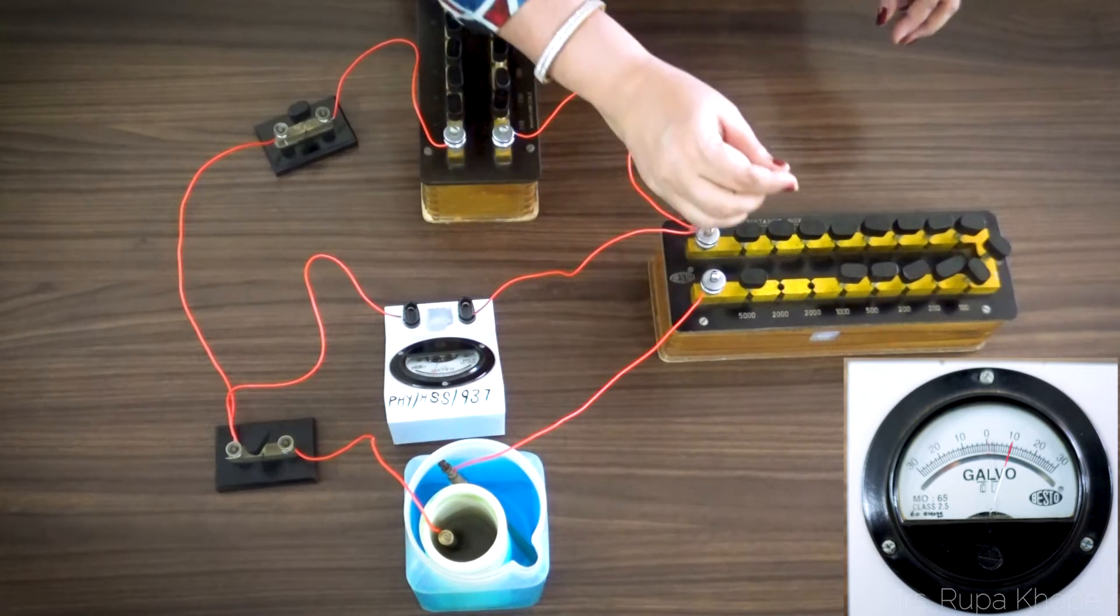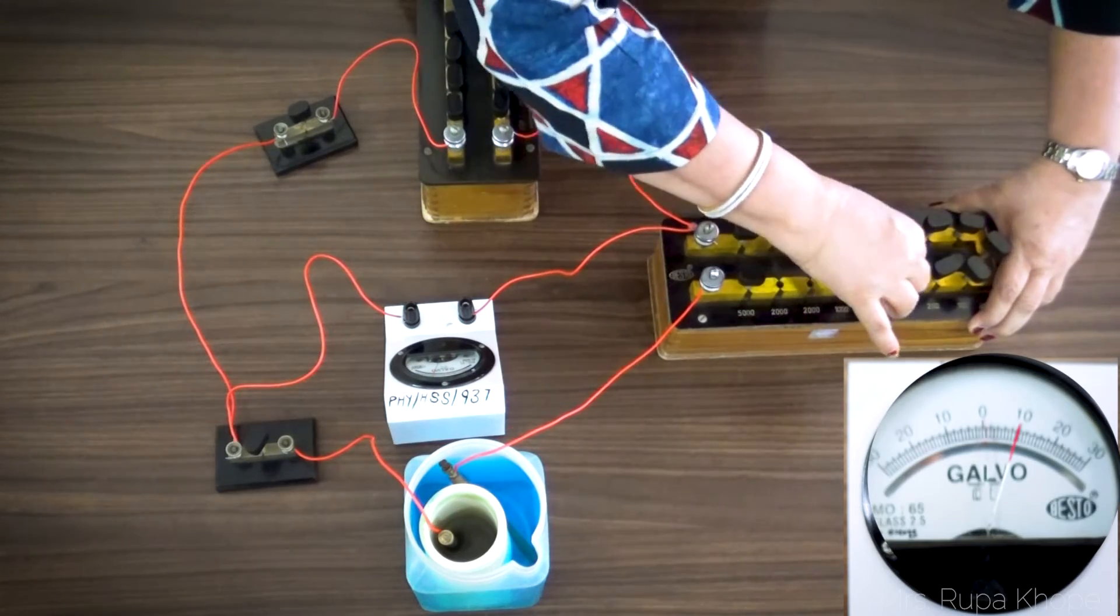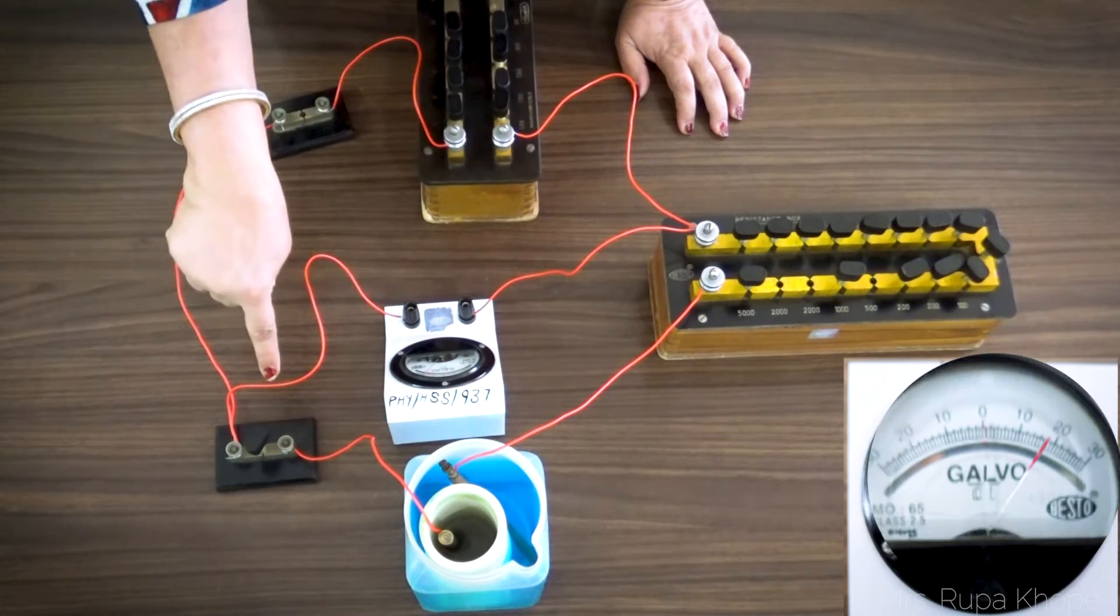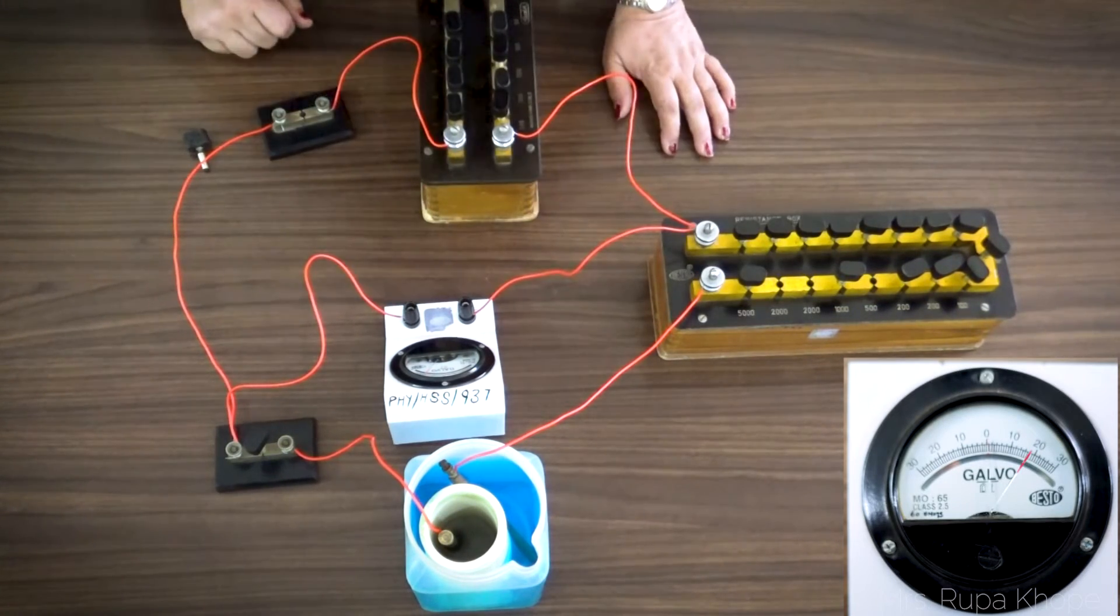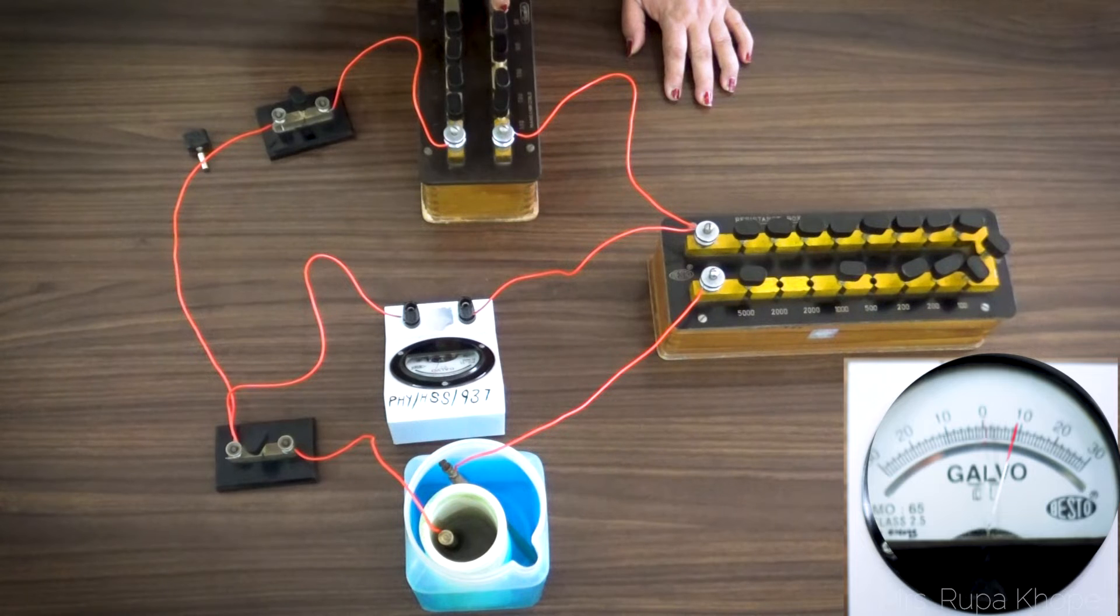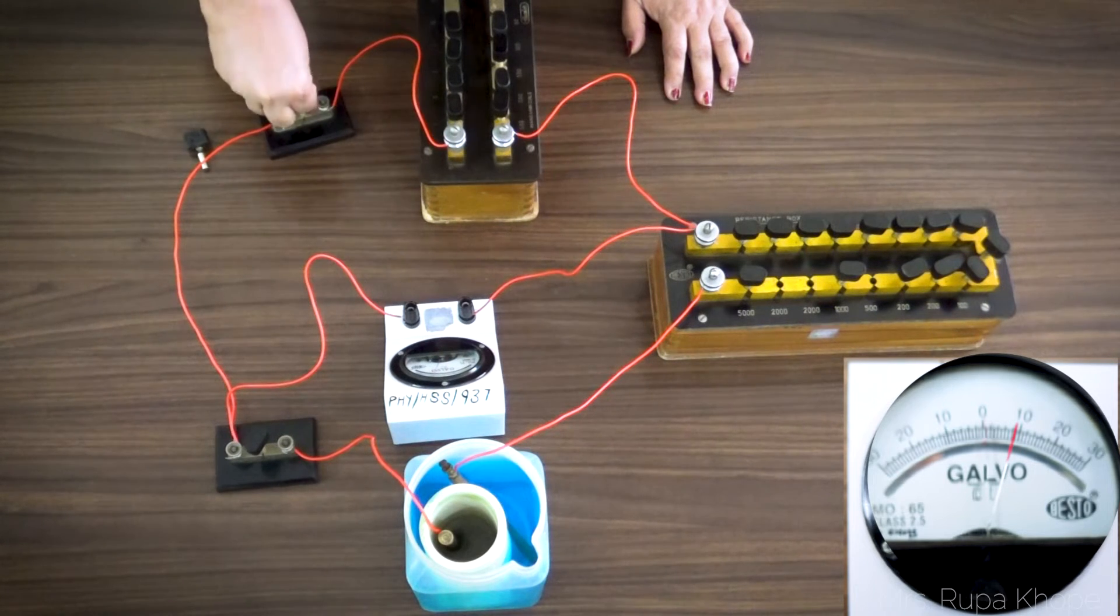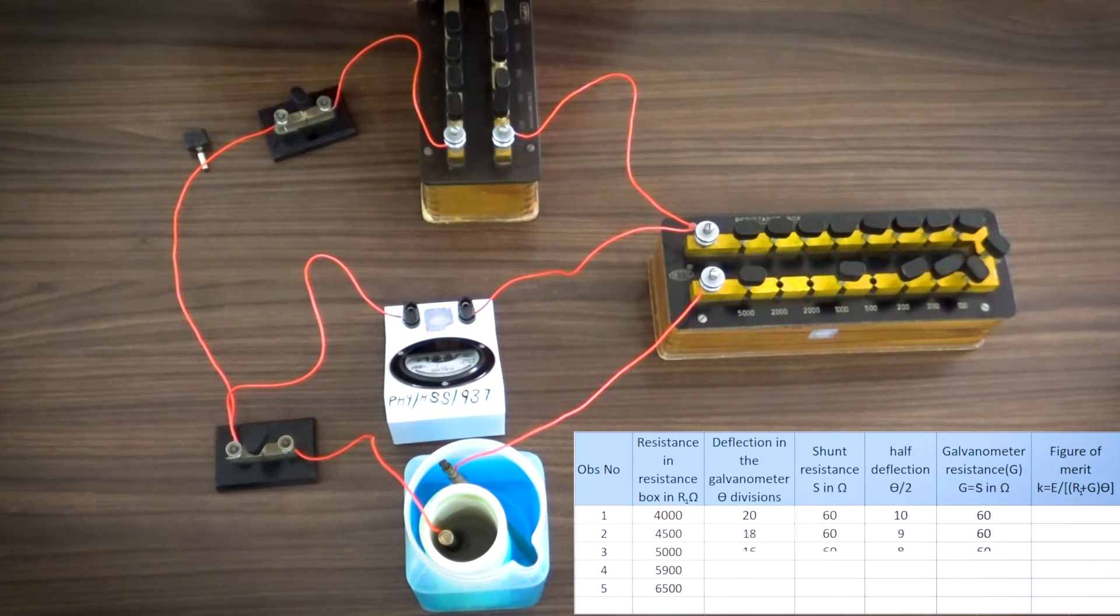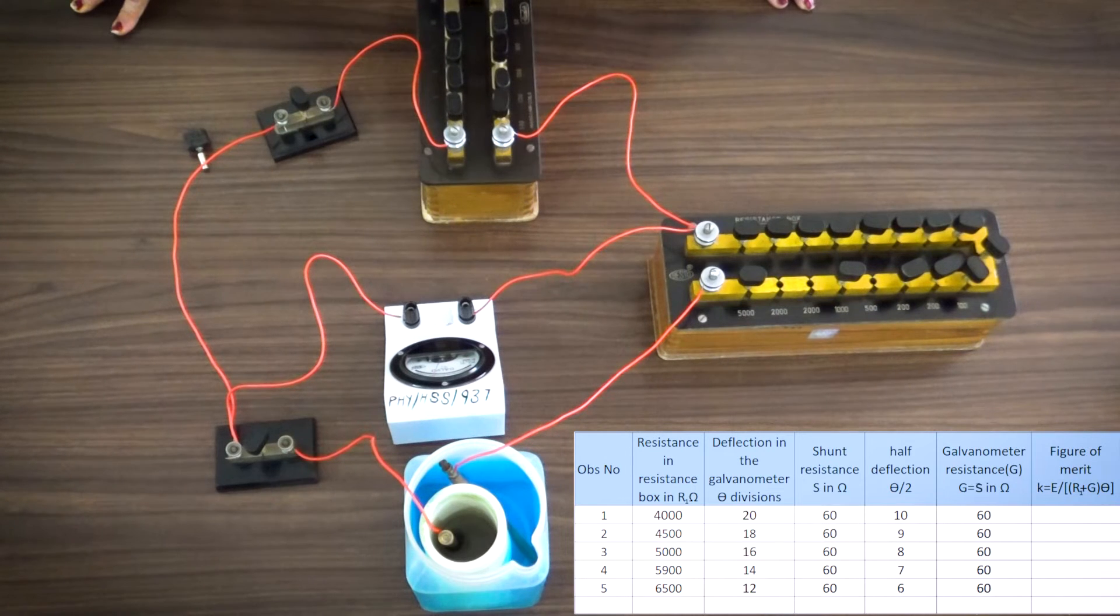Now what we do? I remove 4500. And then I remove this key K2. Remember first part key K1 is on, K2 is off. And I get the reading as 18 divisions. Then I put on this. Remember this is constant resistance of the galvanometer. So I am not changing it. I put on this and I get exactly 9. Like this, I take readings. For 5000 I get 16. Then 5900 I get 14. And 6500 I get 12. Every time I don't touch this resistance box. Because resistance of the galvanometer is constant. And we get various readings.